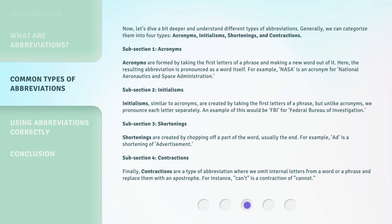Initialisms, similar to acronyms, are created by taking the first letters of a phrase, but unlike acronyms, we pronounce each letter separately. An example of this would be FBI, for Federal Bureau of Investigation.